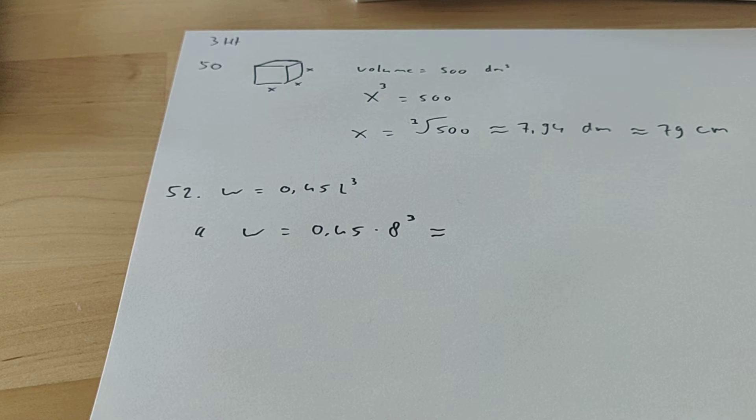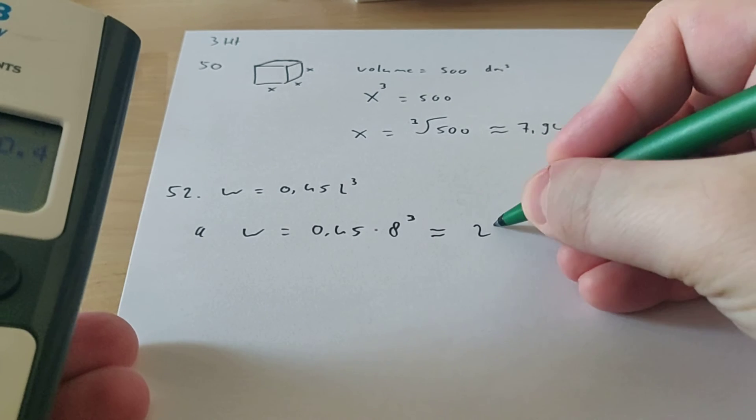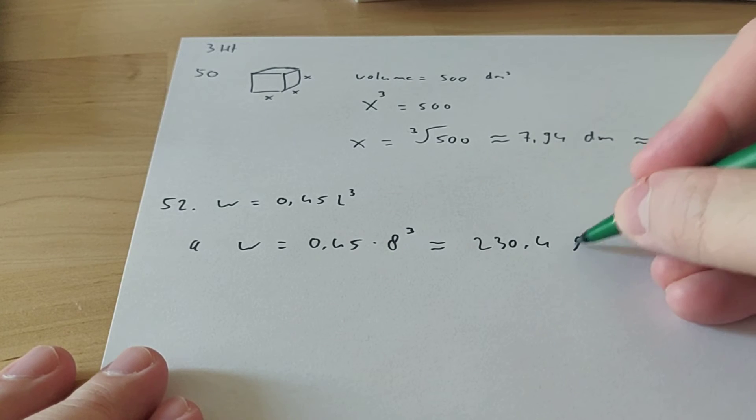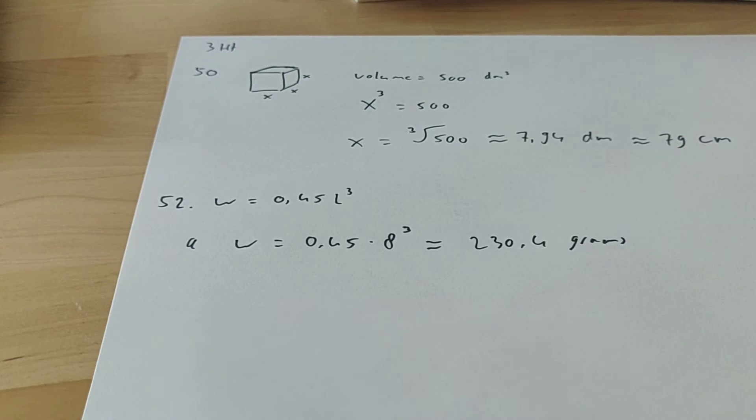All right, so let me calculate that using the calculator. 0.45 times 8 to the power of 3 is 230.4. Let me see what we have to round off to. Yeah, round off to one decimal place. So it's 230.4 grams.